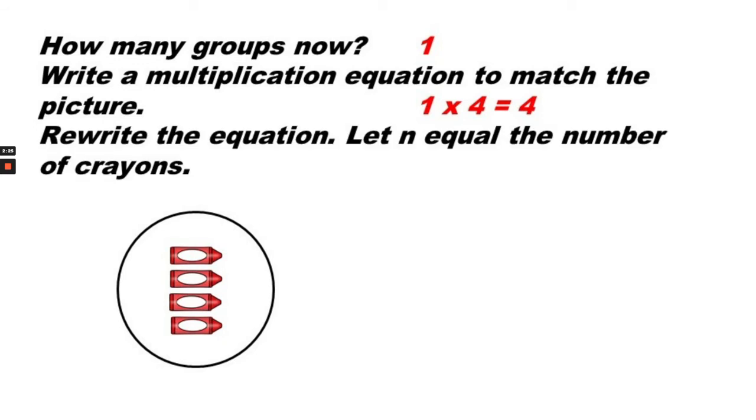Let's use what we learned about using an unknown in an equation to solve for the product. Rewrite the equation letting n equal the number of crayons. So the number of crayons is 4. So we can replace that 4 with the letter n. 1 times n equals n.